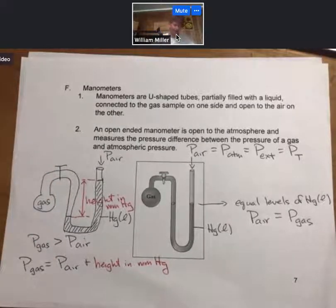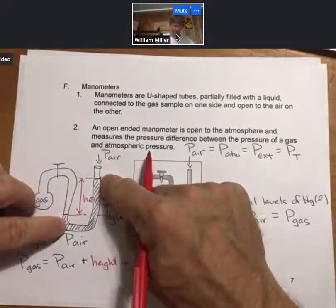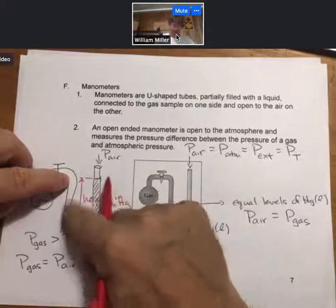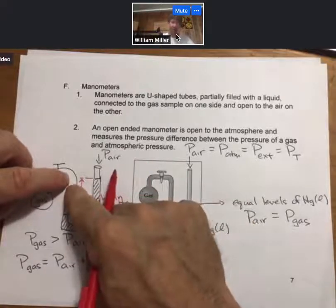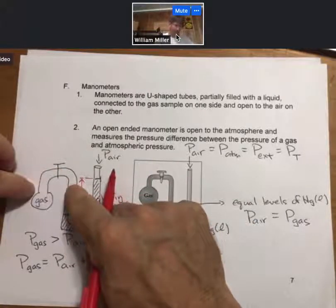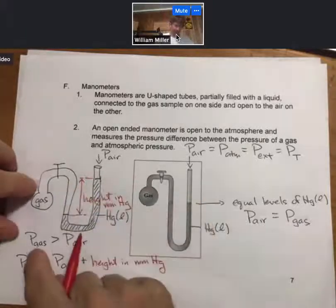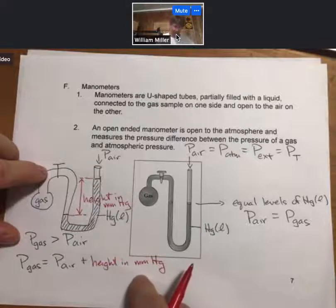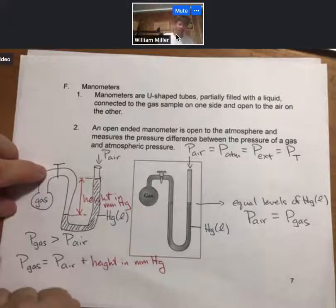This kind of analysis would also allow us to think about if the liquid mercury level were higher towards the gas phase inside the bulb. Then the pressure of the gas would be lower than the pressure of the air, and we would have to add the height in the liquid mercury to the other side.